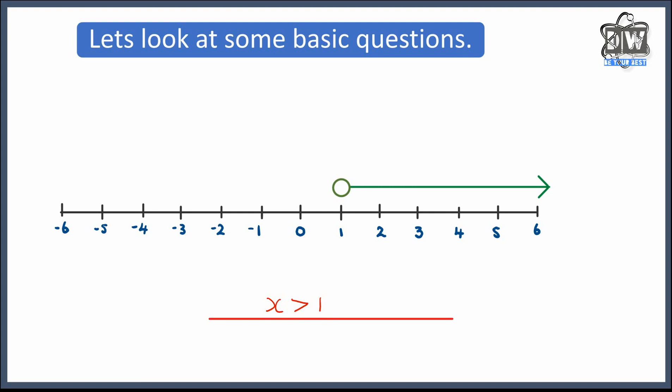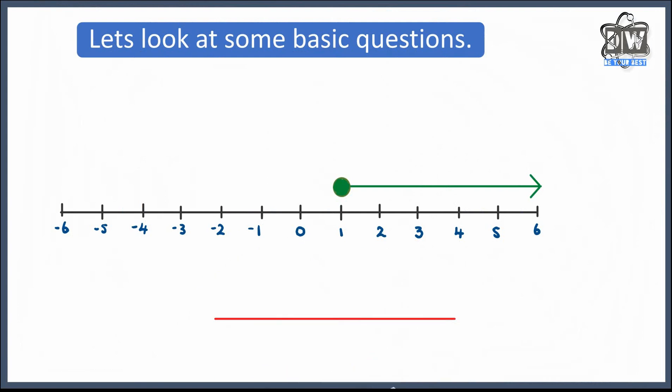Let's look at the next one — this time the circle is shaded in. So we've got x is bigger than or equal to 1. Because we know it could be 1, or it could be 2, 3, 4, 5, 6, 7, 25, 154, 0.3, 0.32 — whatever. It doesn't matter, as long as it's bigger than or equal to 1. So on this occasion it will be including 1.